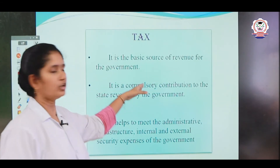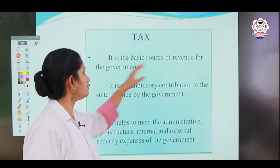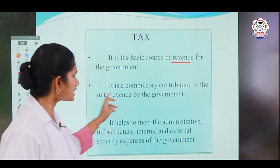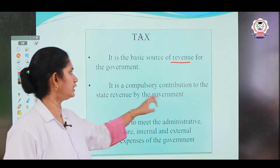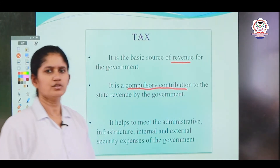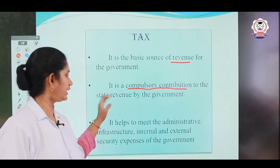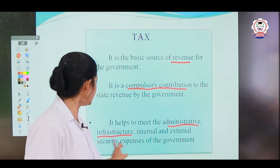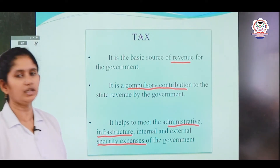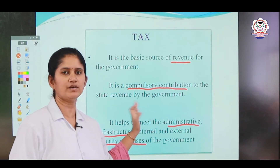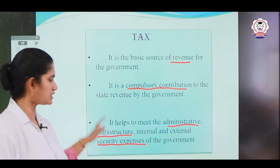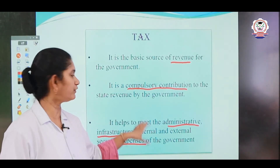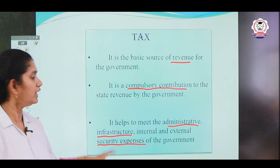Tax is a basic source of revenue for the government — revenue means nothing but income. It is a compulsory contribution to the state revenue by the government. Without this income, the state cannot meet out expenditures like administrative expenditure, infrastructure expenditure, and internal and external security expenses. With the help of that tax amount only, each and every state government looks after these expenses.